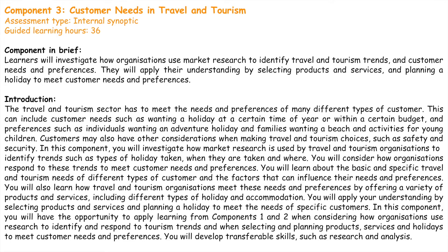Component three is called Customer Needs in Travel and Tourism. Here, we are going to look at how the different travel and tourism sectors meet the needs and preferences of many different types of customer. We will include customer needs such as wanting a holiday at a certain time of year or within a certain budget, and preferences such as an individual wanting an adventure holiday or a family wanting a beach and activity holiday for young children. We also look at how customers may have other considerations when making travel and tourism choices, such as safety and security.